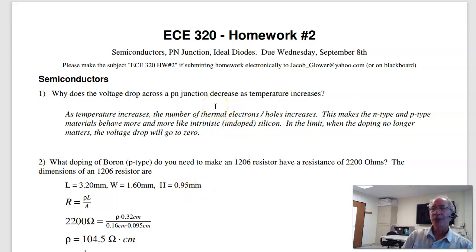The first question is, why does the voltage drop across the P-N junction as temperature increases? If you think about it, if I just have a piece of silicon and measure the voltage across it, I'm going to get zero volts. It'll have some resistance, but no voltage. If temperature is really, really hot, I have so many thermal electrons, so many thermal holes, the doping doesn't really matter. So as temperature goes up, it becomes intrinsic silicon, the voltage goes to zero. Temperature going up causes voltage drop to go to zero.